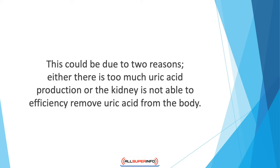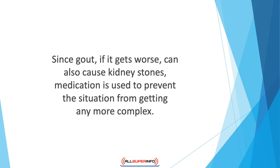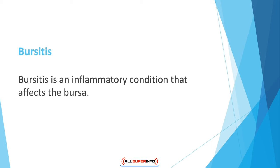Inflammation resulting from excess uric acid crystals in the blood is the prime cause of gout. Gout attacks are specific and quick, mostly occurring in the middle of the night. Medication is used to treat gout, reducing symptoms and preventing future attacks. Since gout, if it worsens, can also cause kidney stones, medication is used to prevent the situation from becoming more complex.